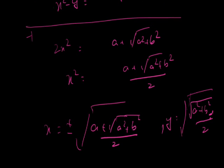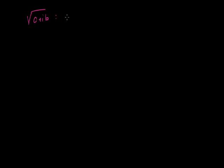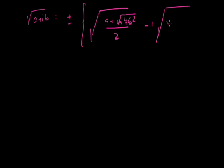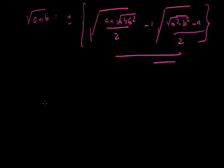There is a notable difference between the forms of x and y, making direct calculation a bit complex. I recommend you plug in the actual values and solve directly rather than memorize this general formula. The general formula is: plus or minus the square root of (a plus square root of a squared plus b squared) over 2, plus or minus iota times the square root of (square root of a squared plus b squared minus a) over 2.